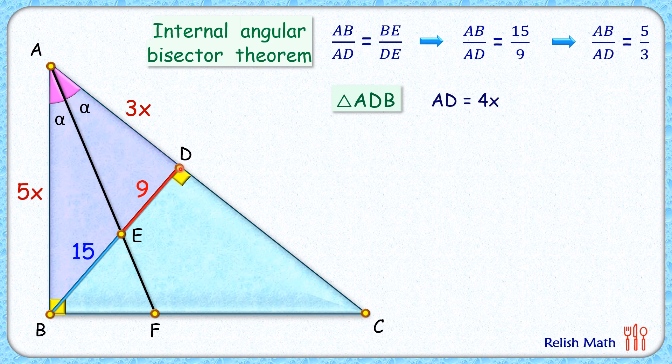But BD value is given as 15 plus 9, that is 24. So setting BD as 24 and solving, we get x as 6. Now putting this value here, AB will be 30 centimeters and AD will be 3 times 6, that is 18 centimeters.